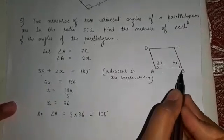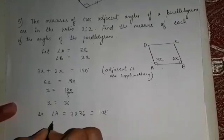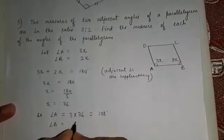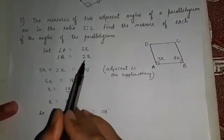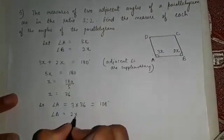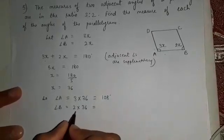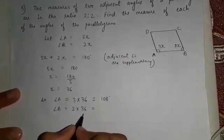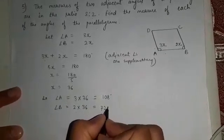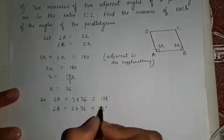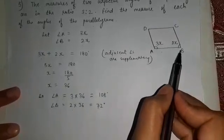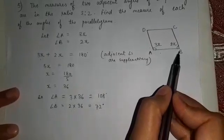Now let us find out angle B. Angle B is equal to 2x, that means 2 multiplied by 36, and 2 multiplied by 36 is equal to 72 degrees. We now have the value of angle B.